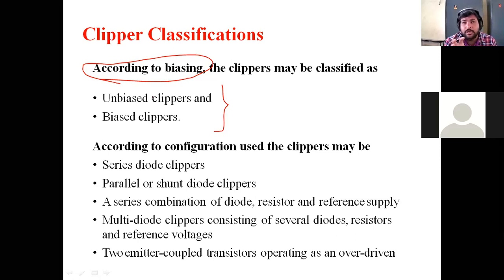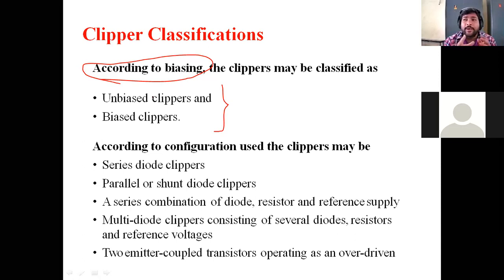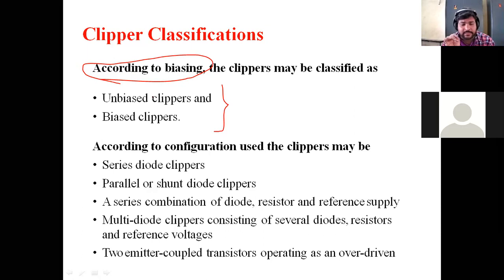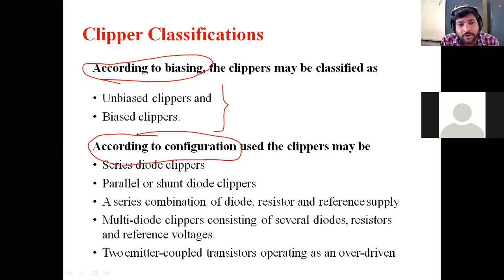Biased clippers are circuits where, in addition to the input signal, a separate DC voltage source is also applied in the circuit — either a positive voltage or a negative voltage. That is called a biased clipper. So according to biasing, there are unbiased clippers and biased clippers. Next, according to configuration.